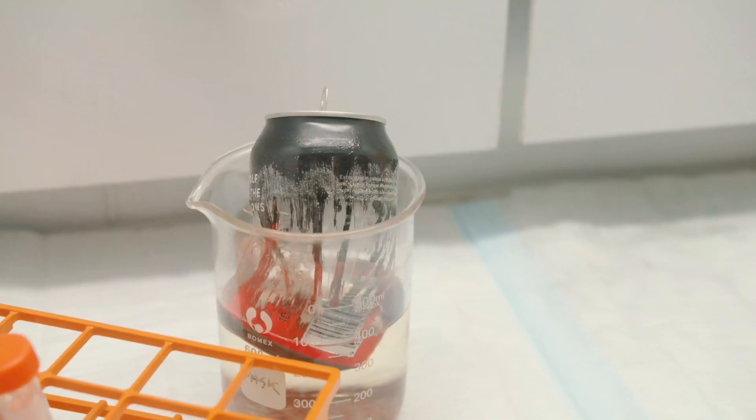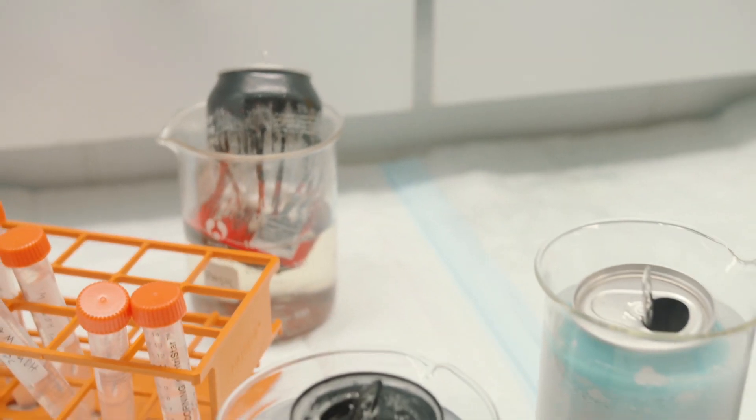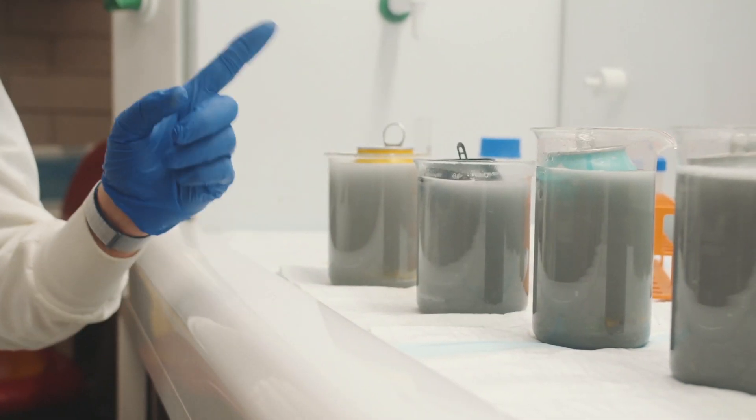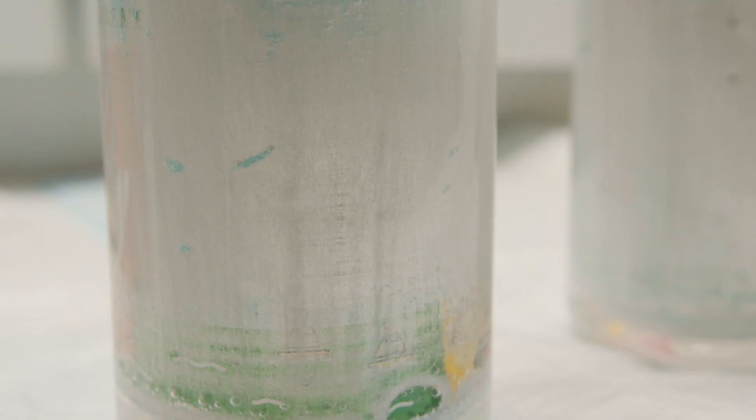That plastic liner is made up largely of a chemical called BPA. One of the things I was really surprised to find out is that beer in particular seems to be able to leach the BPA chemical from that liner into the fluid itself.